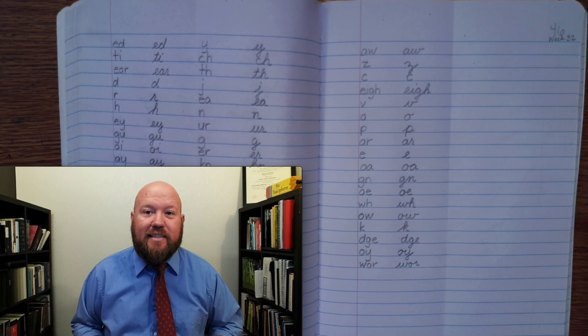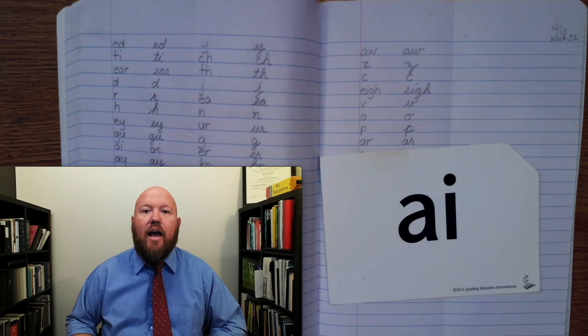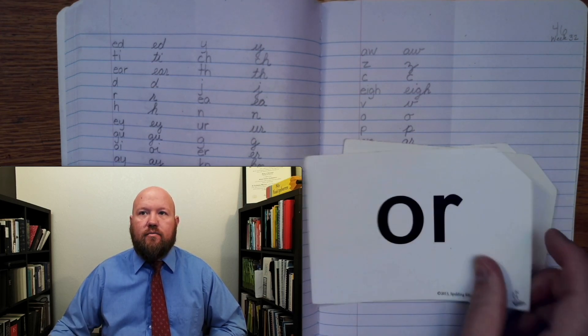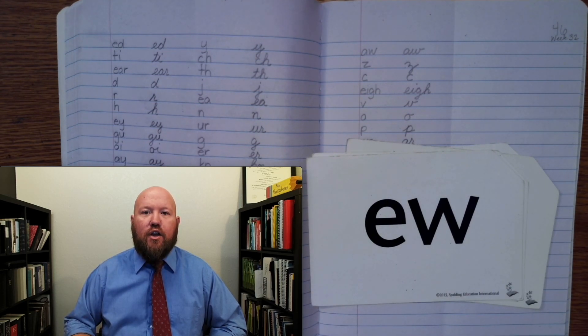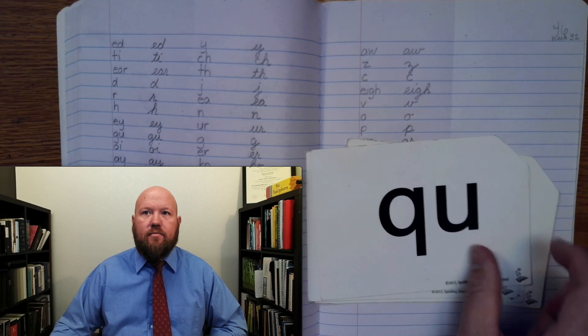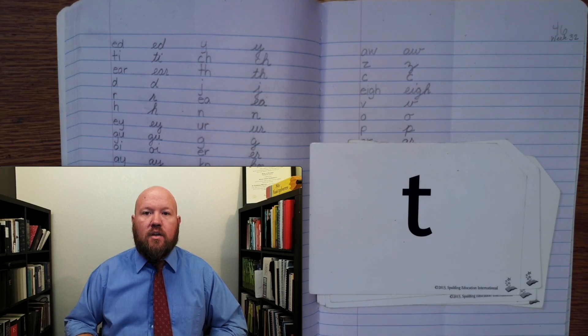First time through, we'll say the sounds only. Try to say them before I do. A, R, Or, OO U, OO U QA T.